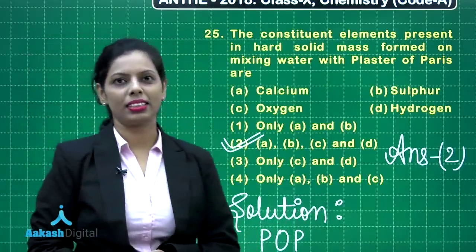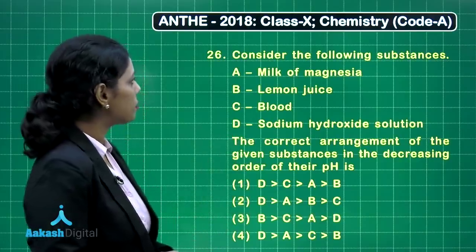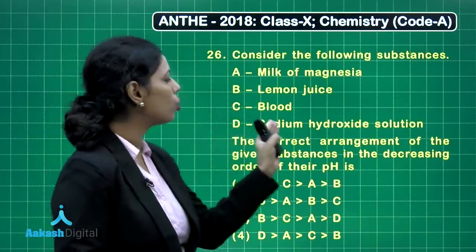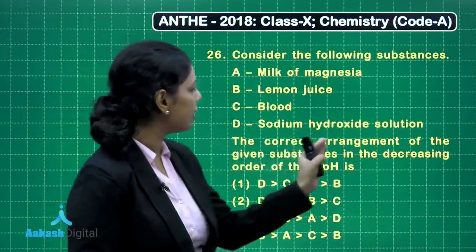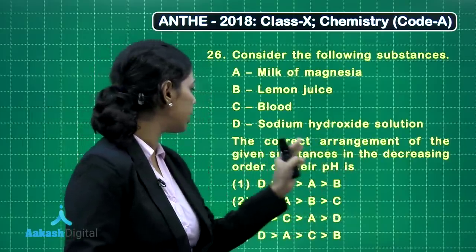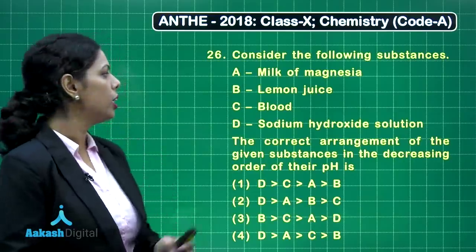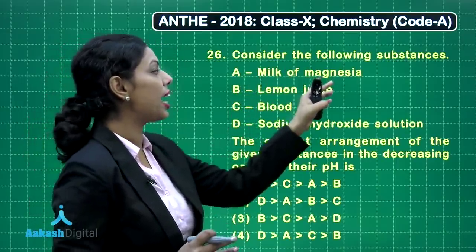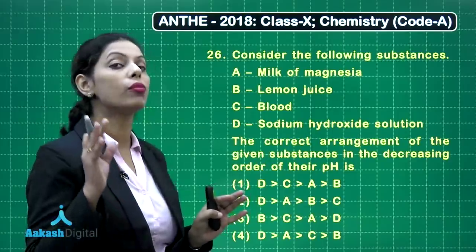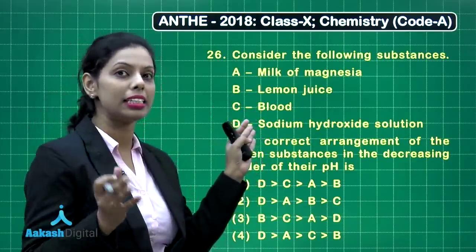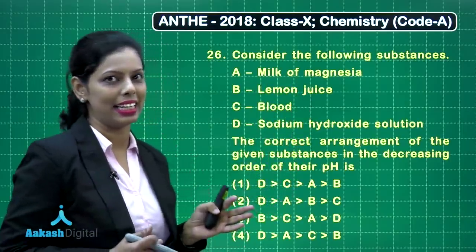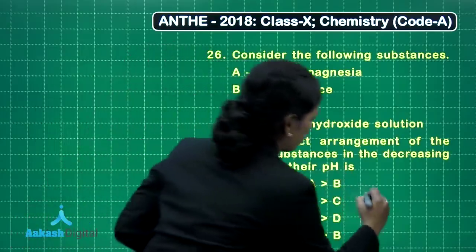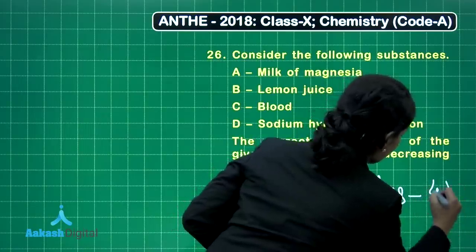Now question number 26. Consider the following substances: A is milk of magnesia, B is lemon juice, C is blood, and D is sodium hydroxide solution. You have to find the correct arrangement in order of decreasing pH value. Sodium hydroxide has the maximum pH, while milk of magnesia has less pH than it. Then comes blood with a pH of approximately 7.4, and then lemon juice, which is acidic. So the correct answer is option four: D, A, C, B.